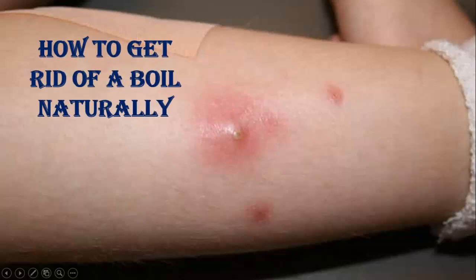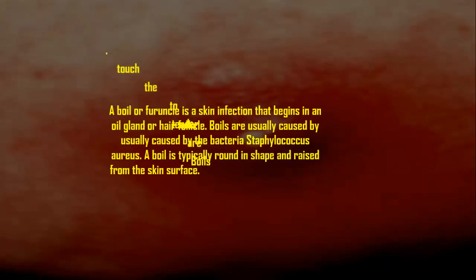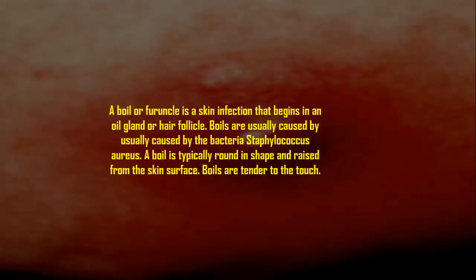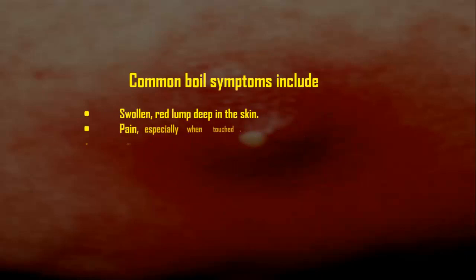How to get rid of a boil naturally. A boil or furuncle is a skin infection that begins in an oil gland or hair follicle. Boils are usually caused by the bacteria Staphylococcus aureus. A boil is typically round in shape and raised from the skin surface, and tender to the touch.